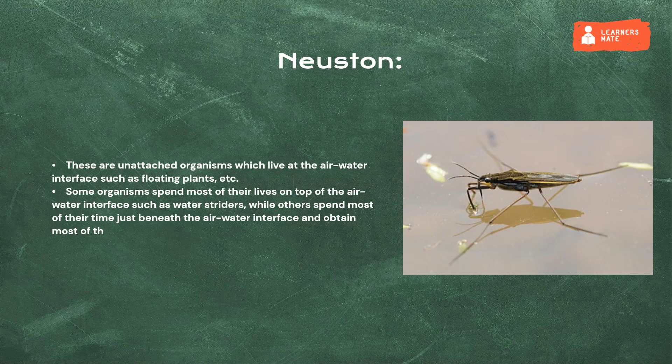The Neuston: these are unattached organisms which live at the air-water interface such as floating plants. Some organisms spend most of their lives on top of the air-water interface such as water striders, while others spend most of their time just beneath the air-water interface and obtain most of their food within the water. Examples include beetles and backswimmers.